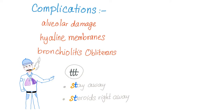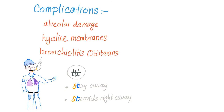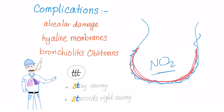Whatever you consider the disease to be, the complications are essentially the same. We have alveolar damage — here is the alveolus, starting to have damage from the grain dust, from the nitrogen dioxide, and so forth — which starts creating a hyaline membrane. Eventually, it can lead to bronchiolitis obliterans from the toxins.